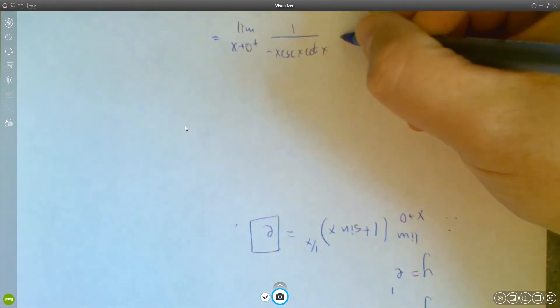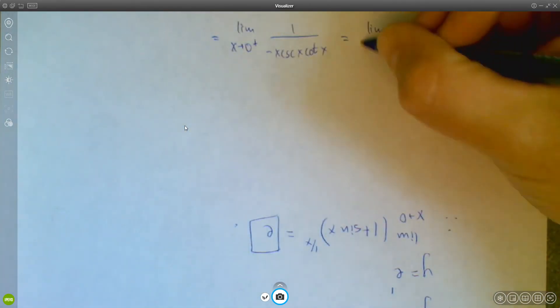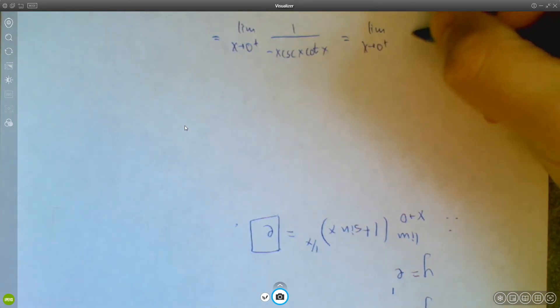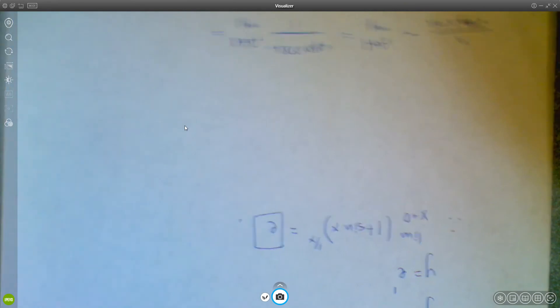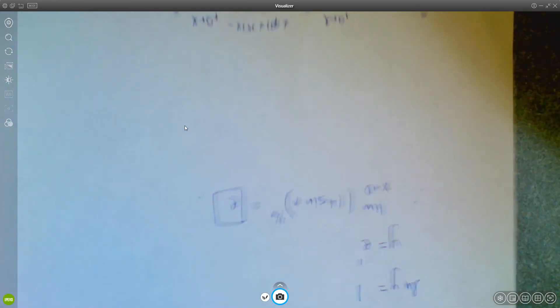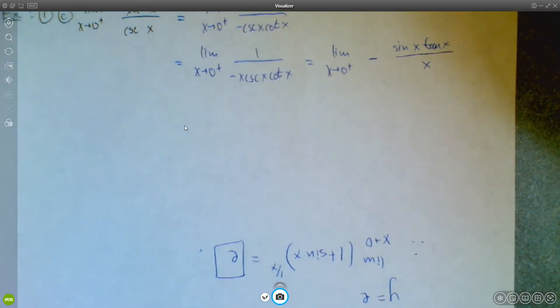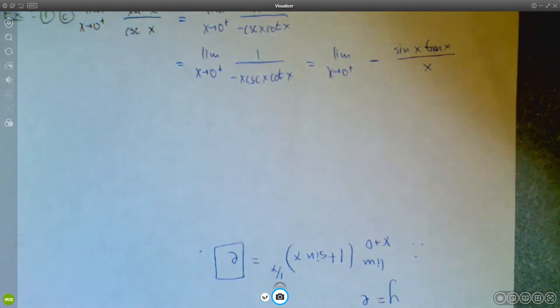I should have had a limit as x goes to 0 of negative sine x tangent x over x. But now this is actually pretty nice, because it ties together something from earlier on in the semester, right? Because now,